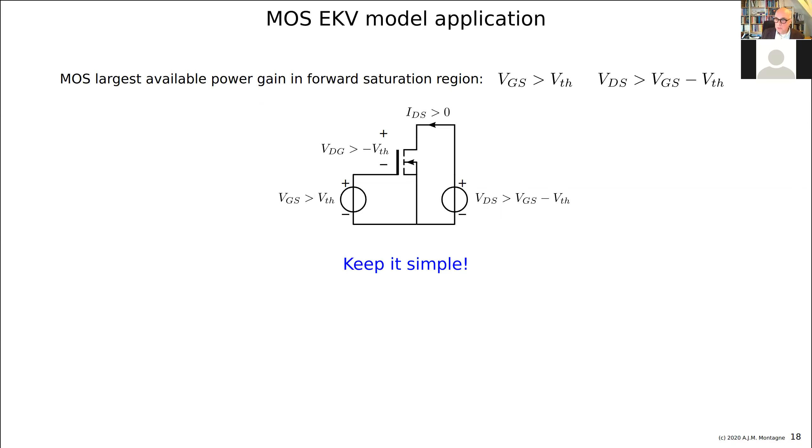Keep it simple. That's important. We want to have rough indications what we have to do during design and not three digits accurate. That is what the simulator will tell us later if it is really important. So up to critical inversion, the inversion coefficient is really a nice thing to have. Up to critical inversion, the transconductance increases with the inversion coefficient. That is what is important to know. Because if you want to have more transconductance, with the same geometry, you have to go to a higher inversion level.